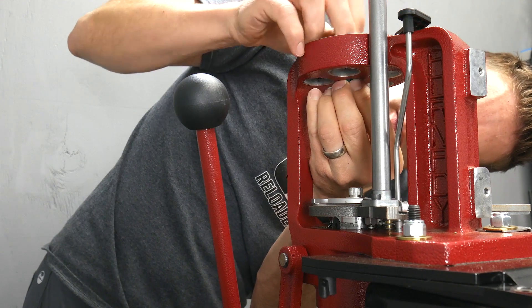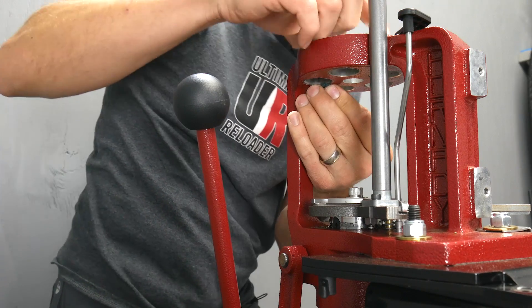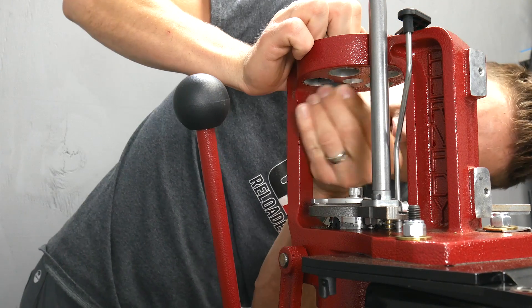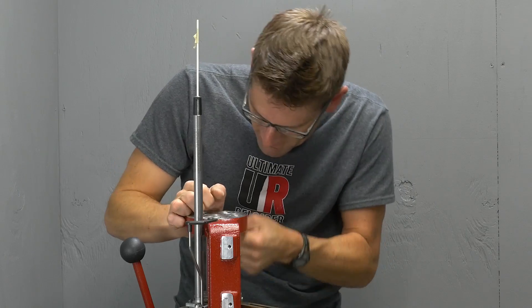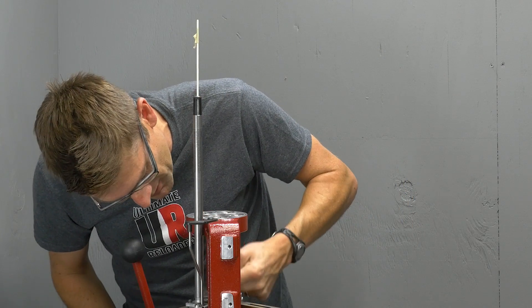Then we're going to go down between stations number three and four, rough up the surface down there and then down the front vertical riser on the press as well.